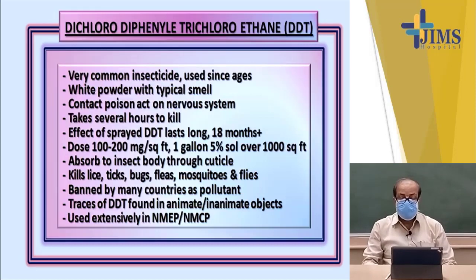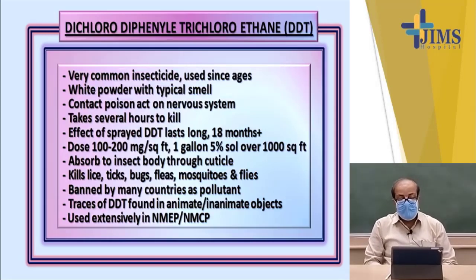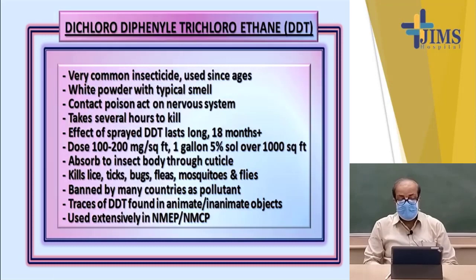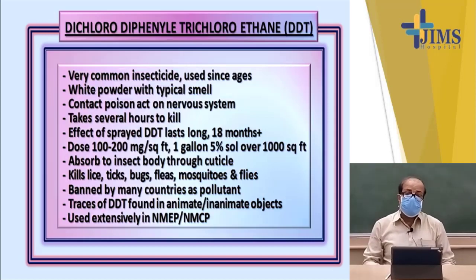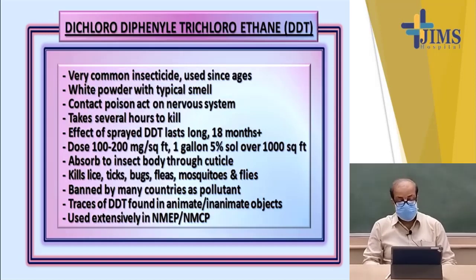DDT is dichlorodiphenyltrichloroethane. It is a white powder with a typical smell. It is a contact poison and acts on the nervous system to kill the insect, taking several hours to kill. The effect of sprayed DDT lasts quite long — DDT is water soluble, can be sprayed onto surfaces, and lasts up to 18 months. The surface sprayed with DDT transmits DDT particles to insects for 18 months, and the insect absorbing DDT through its cuticle may die during this time. That is why DDT spray is known as the long residual spray.